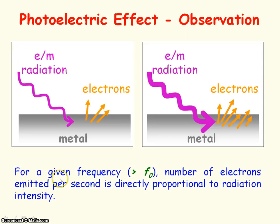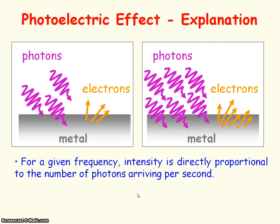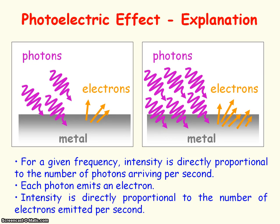It was also observed that for a given frequency of electromagnetic radiation, the number of electrons emitted per second was directly proportional to the radiation intensity. That's because intensity relates to the amount of energy arriving per second, so intensity is proportional to the number of photons arriving per second. Since each photon emits one electron, intensity is directly proportional to the number of electrons emitted per second — so if intensity doubled, we'd have double the electrons emitted per second.